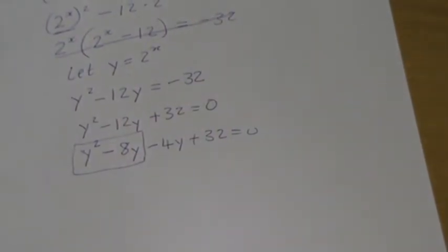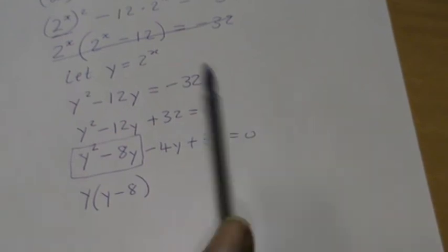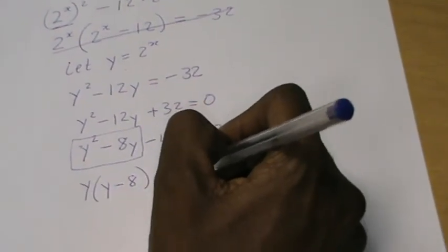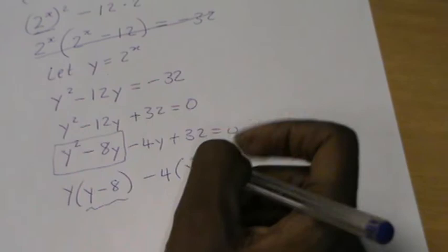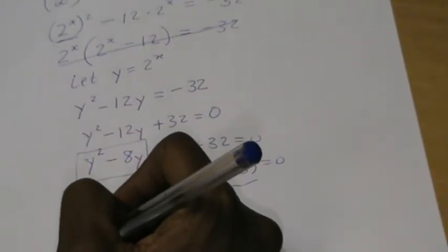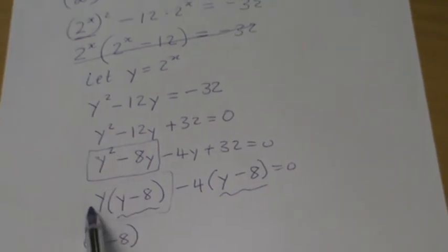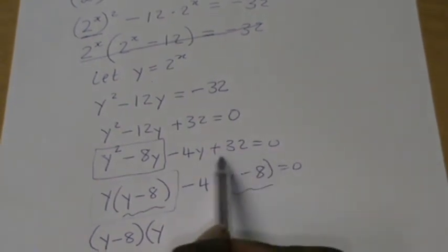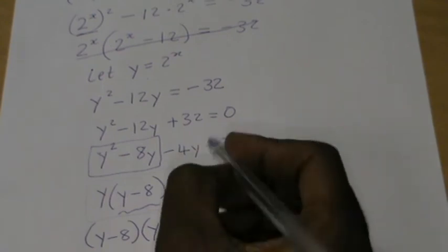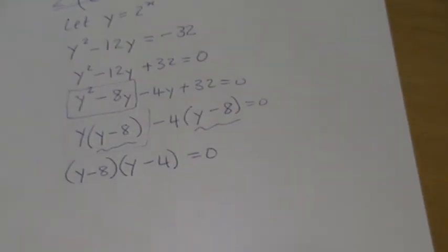The reason we split the middle term is so that y can share with the 8y part, and 32 can share with the 4y part. The order you put them in doesn't actually matter — your answers will be the same. Looking at the first two terms, they have y in common, so factoring out y gives y(y minus 8). The last two terms have negative 4 in common, giving minus 4(y minus 8), all equal to zero.